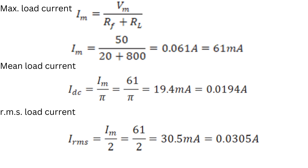For half-wave rectification, Idc = Im / π = 61 mA / π ≈ 19.4 mA. The RMS value of load current Irms = Im / 2, since it is a half-wave rectifier, giving 61 / 2 = 30.5 milli amperes, or 0.0305 amperes.